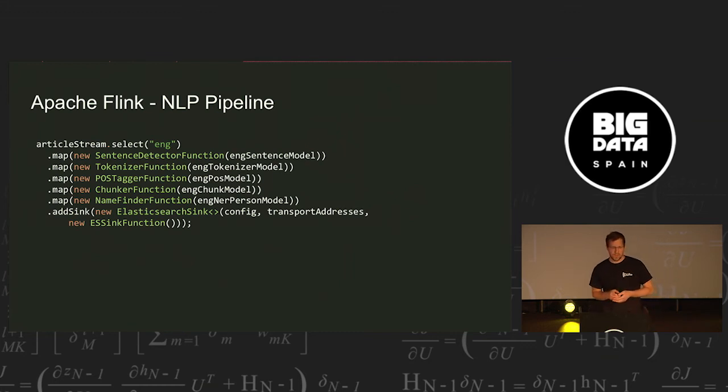So the first pipeline we have is for English, so we do just step-by-step sentence detection, tokenization, part of speech tagging, chunking, and then the chunker depends on the POS tagger, so it is important that this is behind, and all three need to get input, which was first cut into sentences and into tokens. And the last step is name finder, but the name finder could also be just after the tokenizer. So when we are done processing this data, we write it all into Elasticsearch, and this allows us to visualize data or query it. That was our English pipeline.